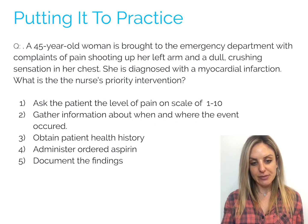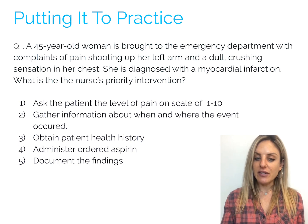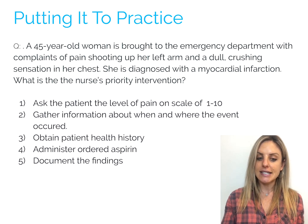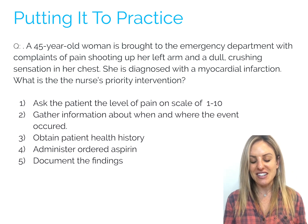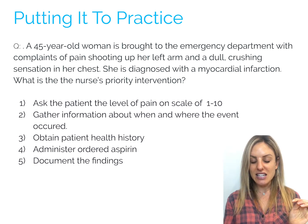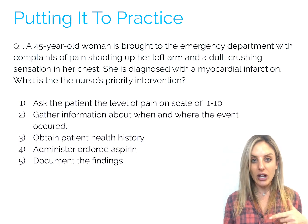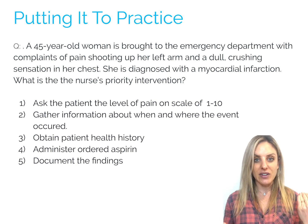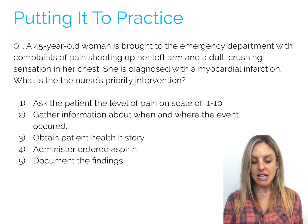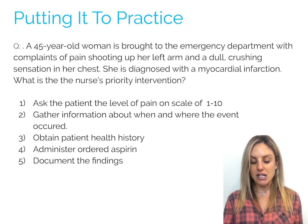Okay, let's go into another question — very similar, but different. A 45-year-old woman is brought to the emergency department with complaints of pain shooting up her left arm and a dull crushing sensation in her chest. She is diagnosed with myocardial infarction. What is the nurse's priority intervention? So again, let's go back to ADPIE. When I see the key term priority intervention, that already tells me they're looking for an intervention. The answer options are: asking the patient the level of pain on a scale of one to ten; gather information about when and where the event occurred; obtain a patient health history; administer ordered aspirin; document the findings.